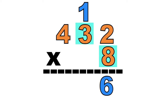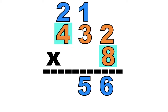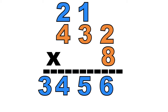Let's multiply 8 times 3 equals 24. Plus 1 equals 25. Then let's carry 2 at the 100th place. 8 times 4 equals 32. Plus 2 equals 34. So the product of 432 and 8 is 3,456.